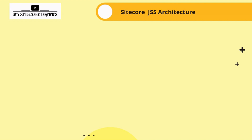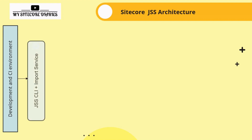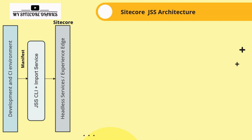Let us look at this diagram to understand the overall flow and components involved in JSS. Starting with the development and CI environment — this is where developers create and manage their code, utilizing continuous integration to ensure everything works seamlessly. Next, we have the JSS CLI and import service. The JSS CLI helps developers scaffold and manage JSS apps, while the import service imports the app's manifest into Sitecore, including all metadata, configuration details, and content data.